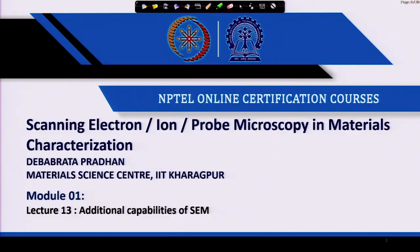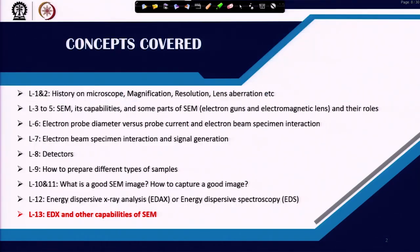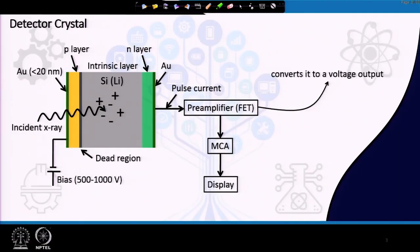Welcome back to our course on scanning electron ion probe microscopy. In our last lecture, we were discussing energy dispersive X-ray analysis, which is used to measure the elemental composition in an SEM. We left off while discussing the detector — a PIN silicon detector where the silicon is doped with lithium to reduce conductivity.